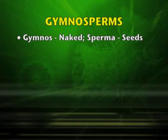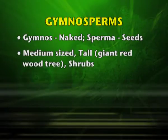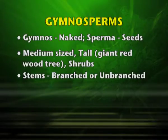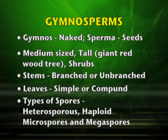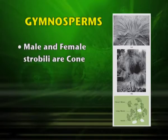Gymnosperms are naked-seeded plants. Gymnos means naked and sperma means seeds. They may be medium-sized plants or huge trees like the giant redwood tree, known as the Sequoia tree, or shrubs. The stems are branched or unbranched and the leaves may be simple or compound. They are heterosporous, producing haploid microspores and megaspores found in sporangia borne on sporophylls. The male and female strobili are known as cones — this is the cone of a pine, referred to as the strobilus.